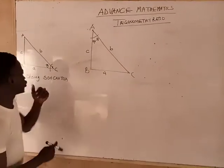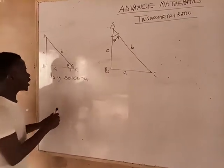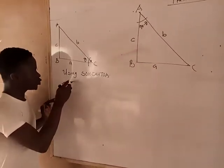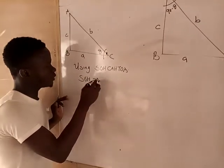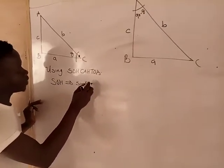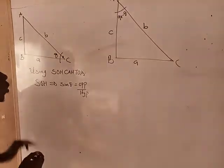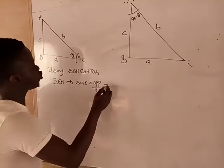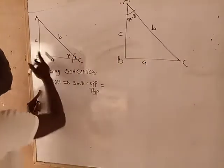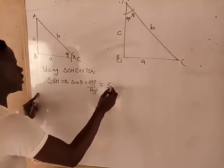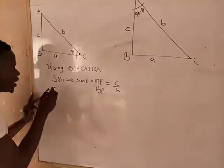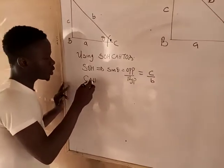So if we are making use of SOH CAH TOA, sine theta equals opposite over hypotenuse. Opposite by hypotenuse, which is equal to C over B from SOH CAH TOA.